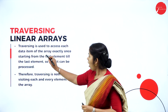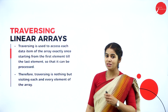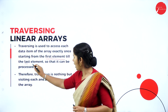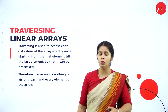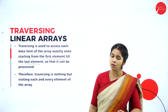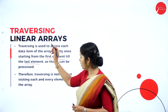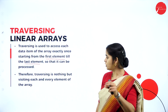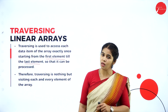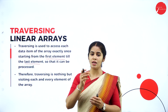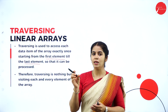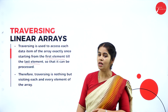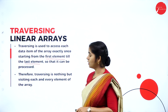Traversing is used to access each data item of the array exactly once, stretching from the first element till the last element, so we can know what all the elements are in the array. Traversing means visiting each and every element of the array — visiting all the indices of the array.